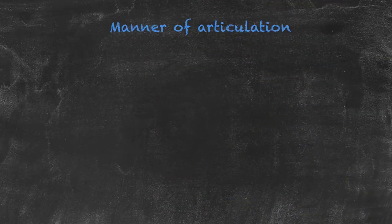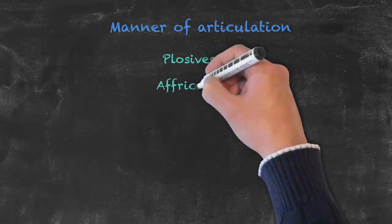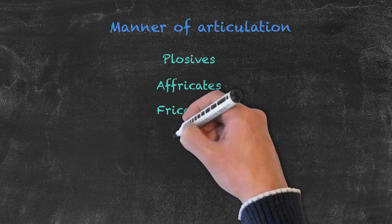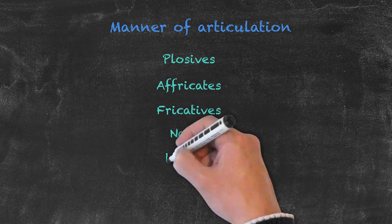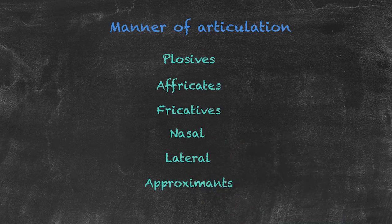When it comes to manner of articulation, we have six different ways in which our breath is produced in order to make our sounds. We have our plosives, our affricates, fricatives, the nasal sounds, our lateral sound, and the approximants. Let's take a look at each individually and see how they differ from one another.